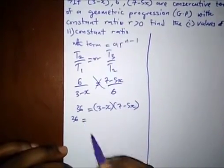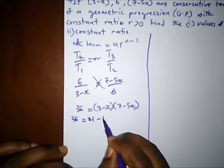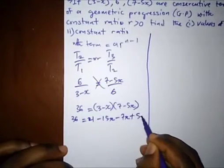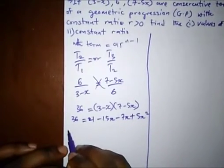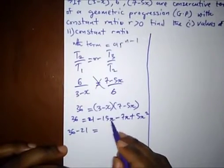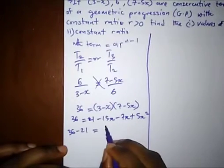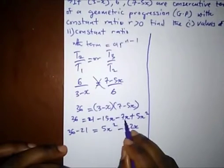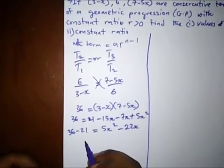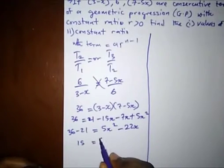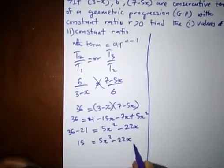Opening the brackets, we get 21 minus 15x minus 7x plus 5x squared. Bringing 21 across, we have 36 minus 21 equals 5x squared minus 22x. That's 15x plus 7x giving us minus 22x, so we are left with 15 equals 5x squared minus 22x.